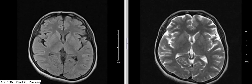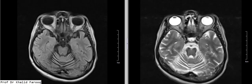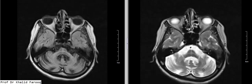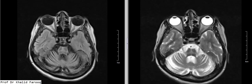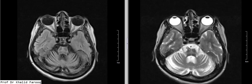Bismillahirrahmanirrahim. Assalamu alaikum warahmatullah. Here we can see this is an MRI of the brain where we have normal brain parenchyma in the supratentorial compartment, but there is prominent cerebellar folial patterns involving both cerebellar hemispheres including the vermis. We can see folial patterns and subarachnoid spaces are prominent in this region.